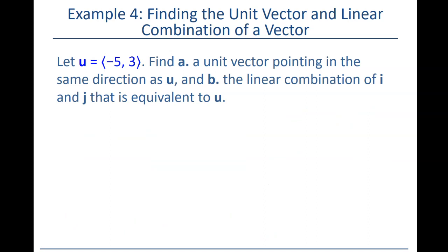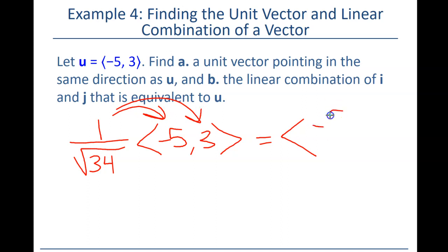What happens is we get a new vector. So if we multiply by 1 over the square root of 34 times our old vector, we get a new vector. Remember, it's like the distributive property. I just give this scalar to each one of these, and I get negative 5 over the square root of 34 and 3 over the square root of 34. And that is my new unit vector.